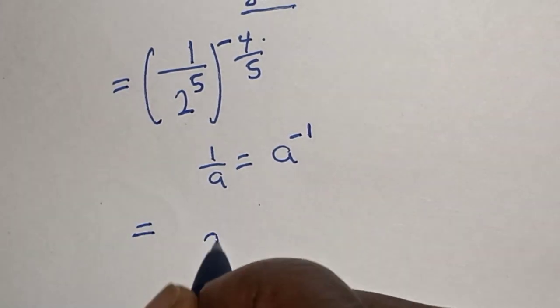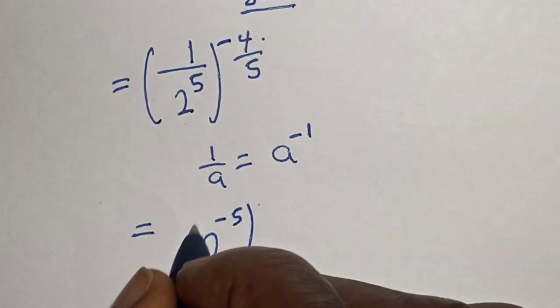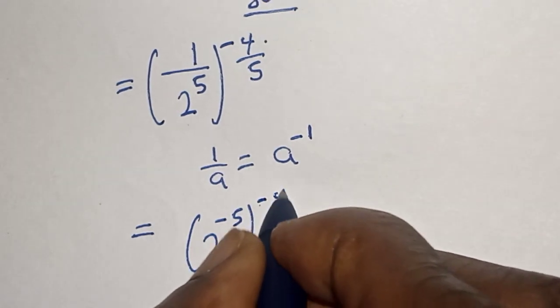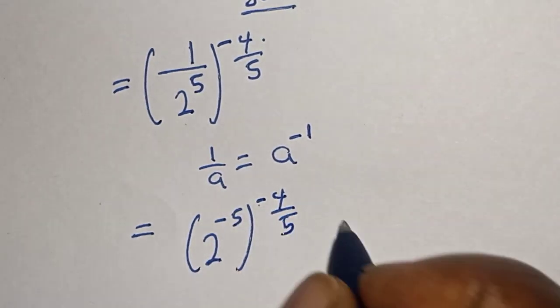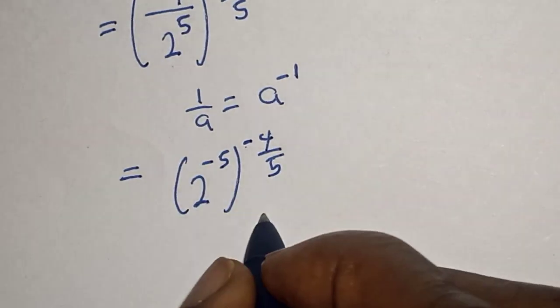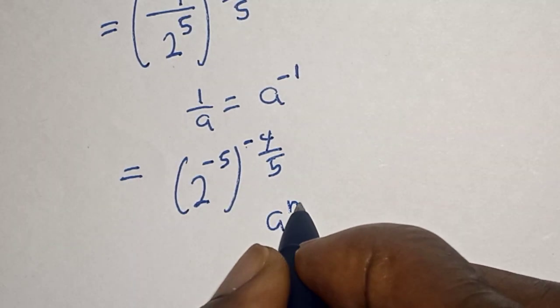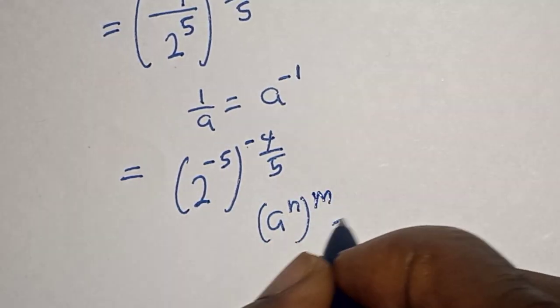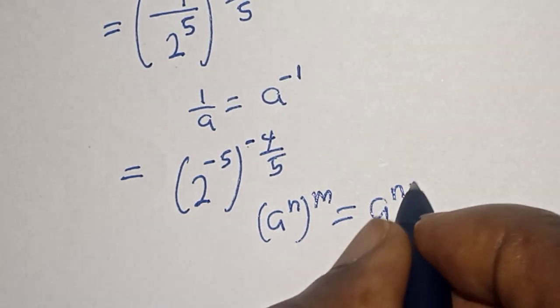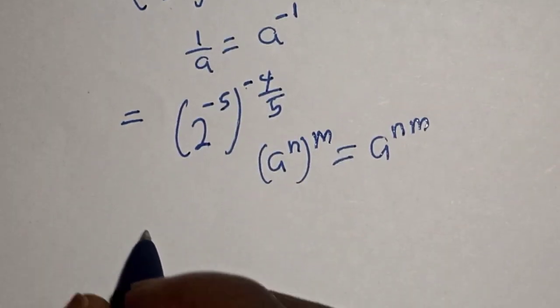Take note of this: a raised to power n, raised to power m, is equal to a raised to power n times m.